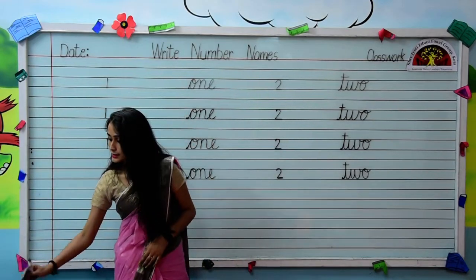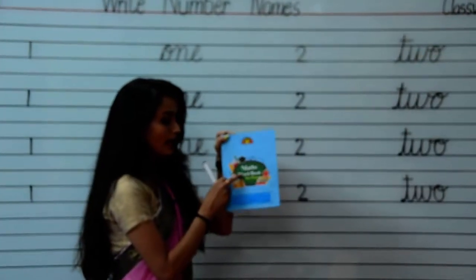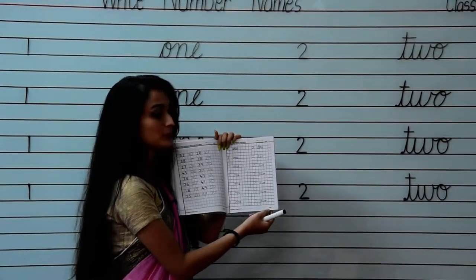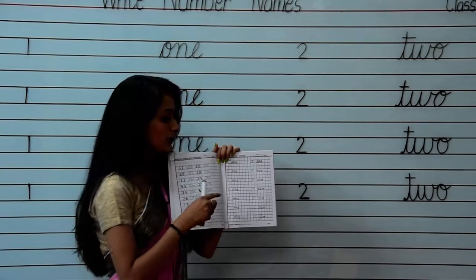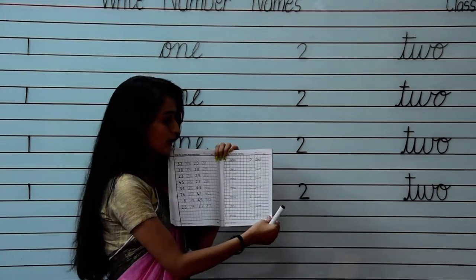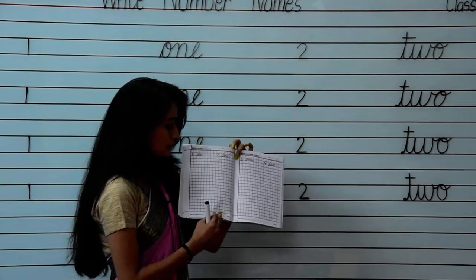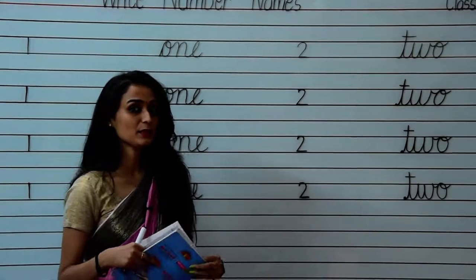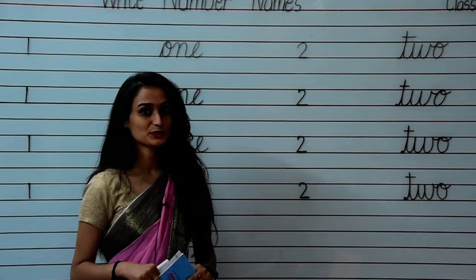So kids, you have to do this in your maths workbook on page number 33 — write the spelling of 1 and 2. And also, you have to complete your page number 34. You have to write very neatly and beautifully, kids. Have a nice day. Thank you, bye-bye.